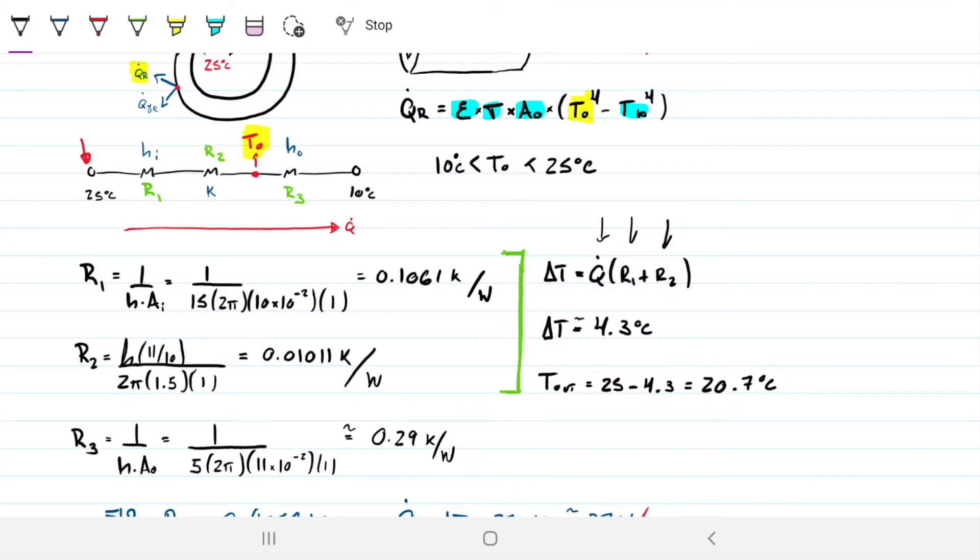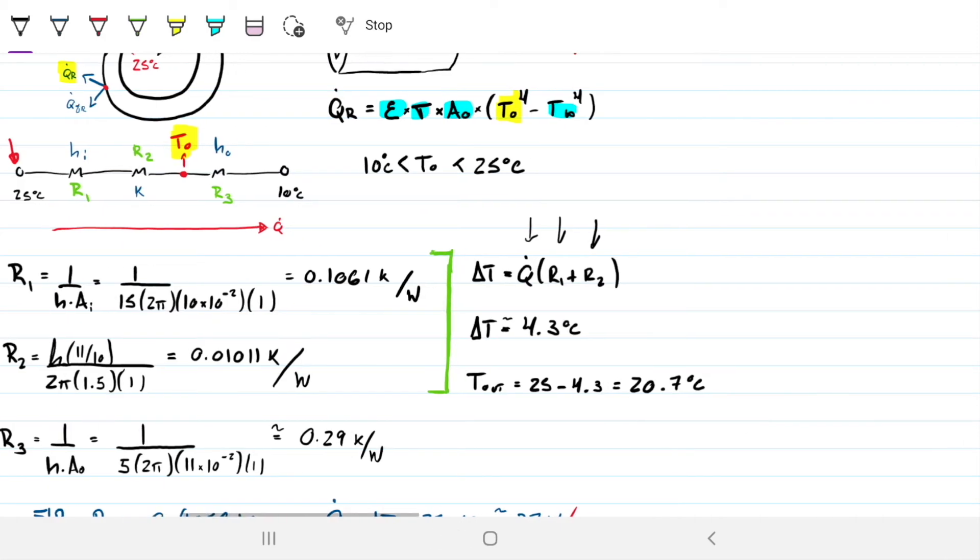Okay, and this is the temperature that I found by assuming there was no radiation taking place whatsoever. And I know that's incorrect, but now this is the interesting part because now that I have the T0, I can calculate what's the radiation there. And with that, I can create an equivalent convective resistance so that I can now find the next iterative process. So let's go ahead and do this.